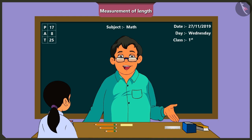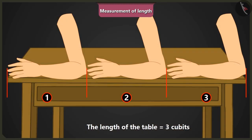Now look at the length of this table. It is equal to three cubits of my arm.